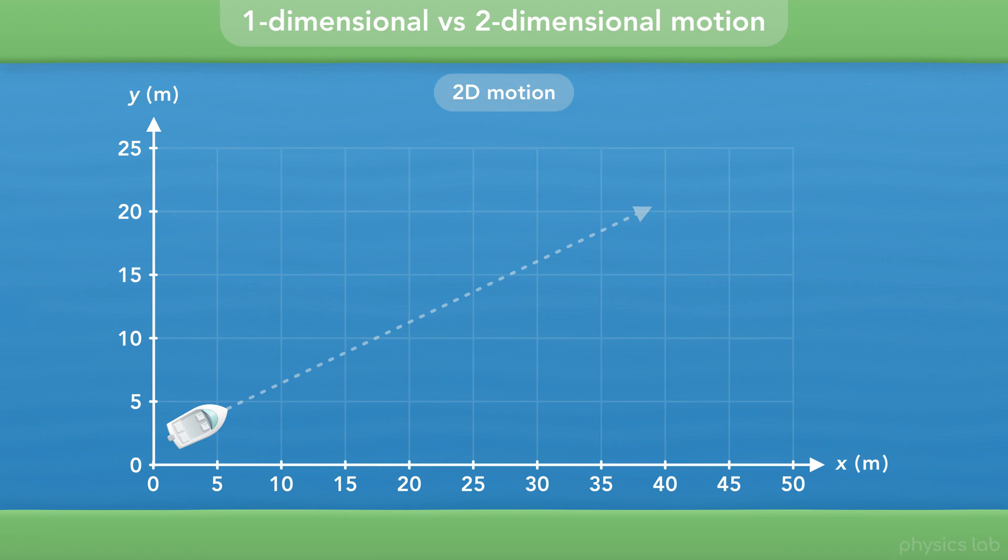If using the Y axis is confusing, we could use the Z axis instead. Or if we used a compass, this could be the east-west axis, and then this would be the north-south axis. The point is, if we establish two axes, like we see here, then this boat's position is changing along both axes at the same time.